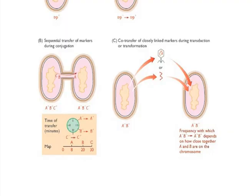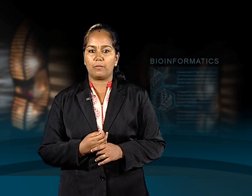To be co-transferred during transduction and transformation two or more markers must be closely linked because these processes usually result in less than 50 kilobase of DNA being passed from donor to recipient. Transduction and transformation mapping are used to determine the relative positions of markers that are too close together to be mapped precisely by conjugation analysis.